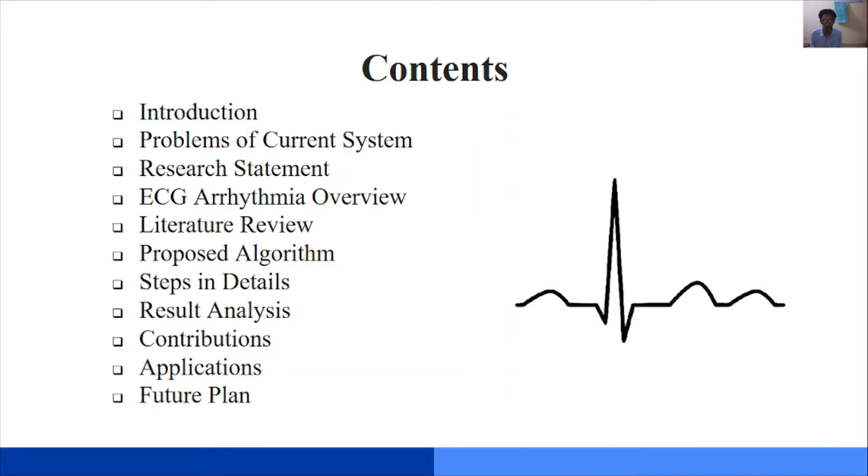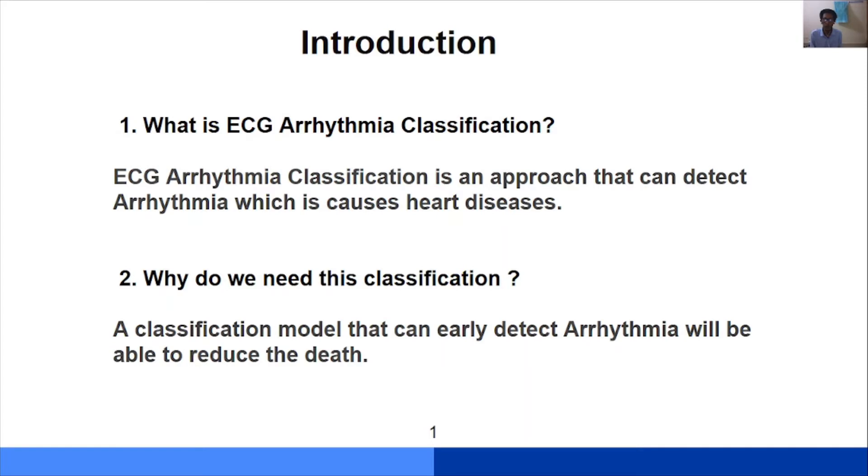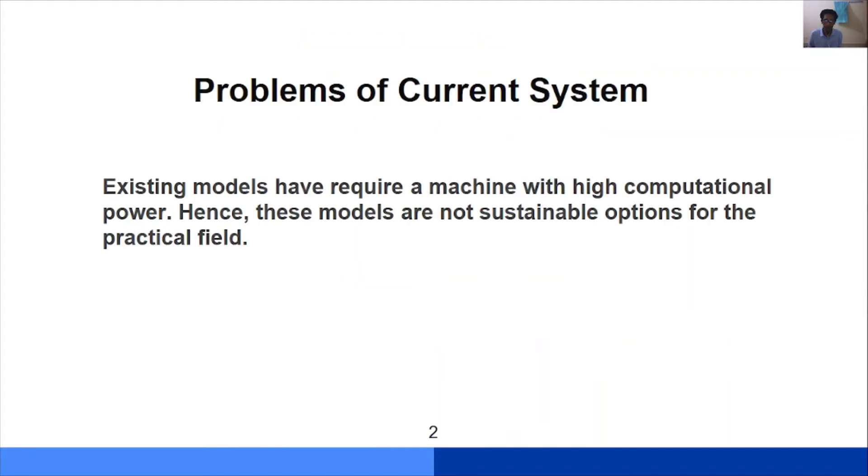What is ECG arrhythmia classification? ECG arrhythmia classification is an approach that can detect arrhythmia which causes cardiac death. Why we need this is because if we can detect early arrhythmia it will be able to reduce death. The problems of current systems are that existing models require machines with high computational power. Their models are complex and need high-end systems. Hence these models are not a sustainable option for the practical field where high-end systems are not affordable.